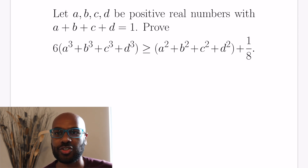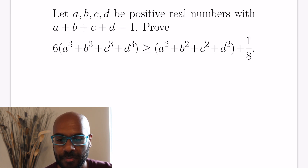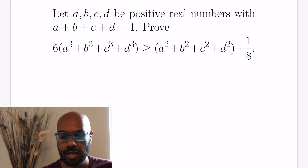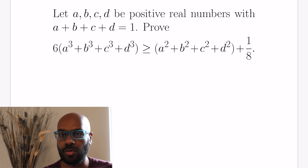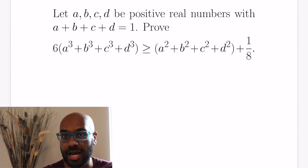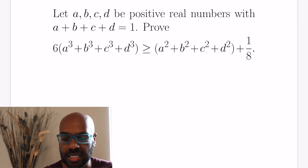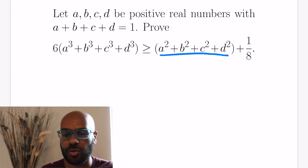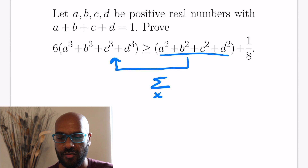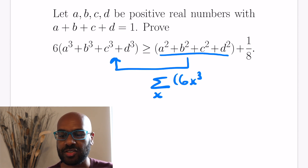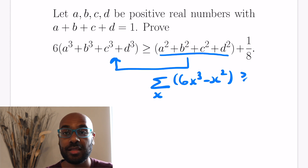Let's go ahead and establish this inequality. The first thing we ought to do is manipulate it so that all variables are on one side, letting us handle the algebraic expressions separately from the constants — a general strategy when constants are isolated in inequalities. We take the sum of the squares and move it to the left-hand side. Summing over all variables, we write that as a sum over x of the quantity 6x³ minus x², and we're trying to establish that's at least one eighth.